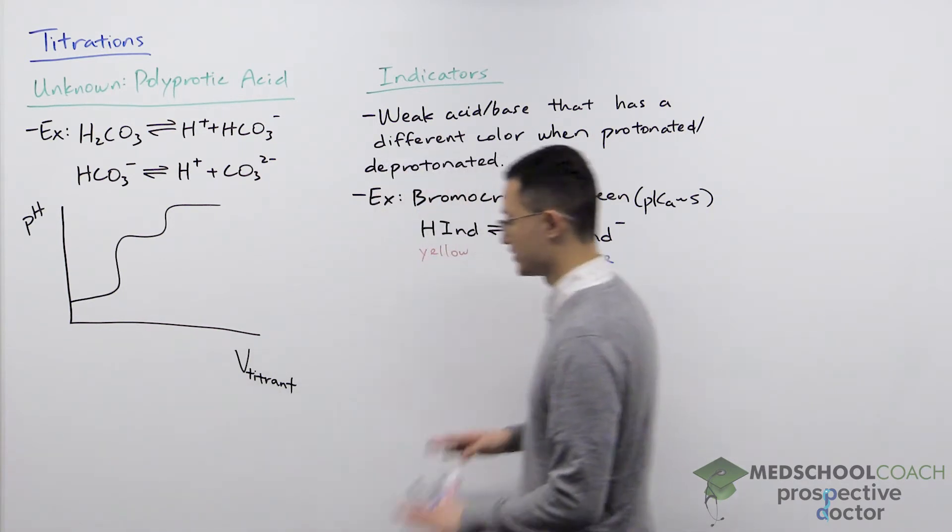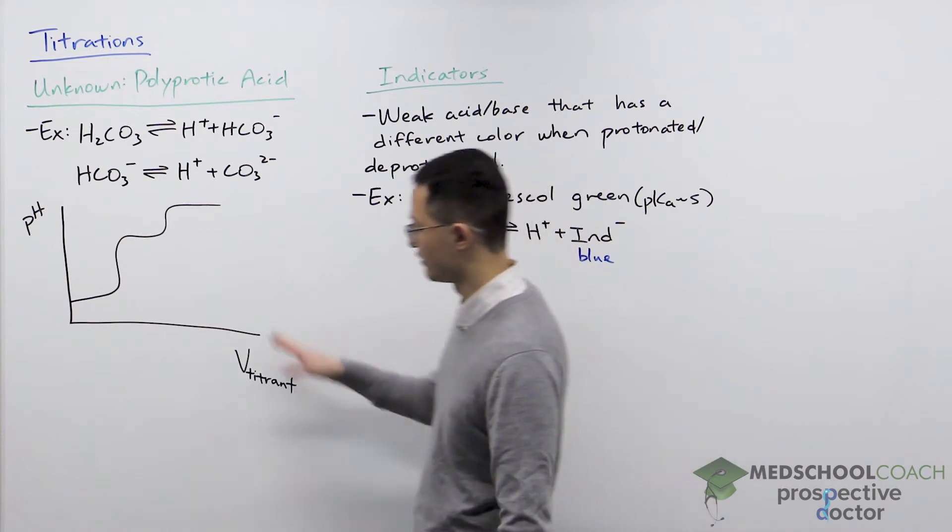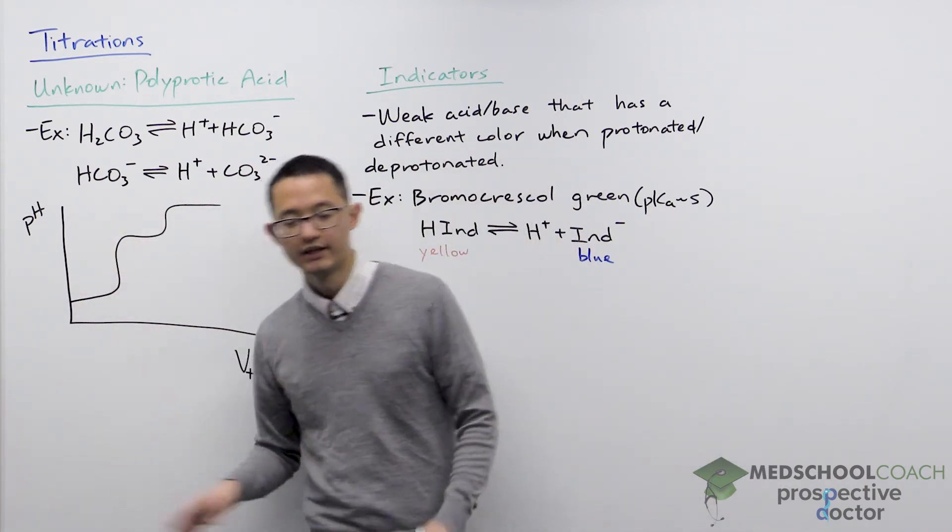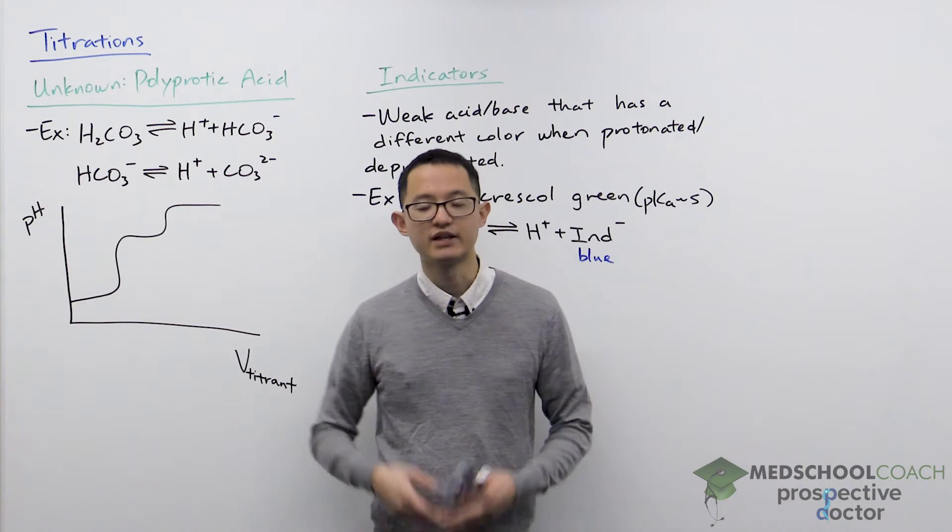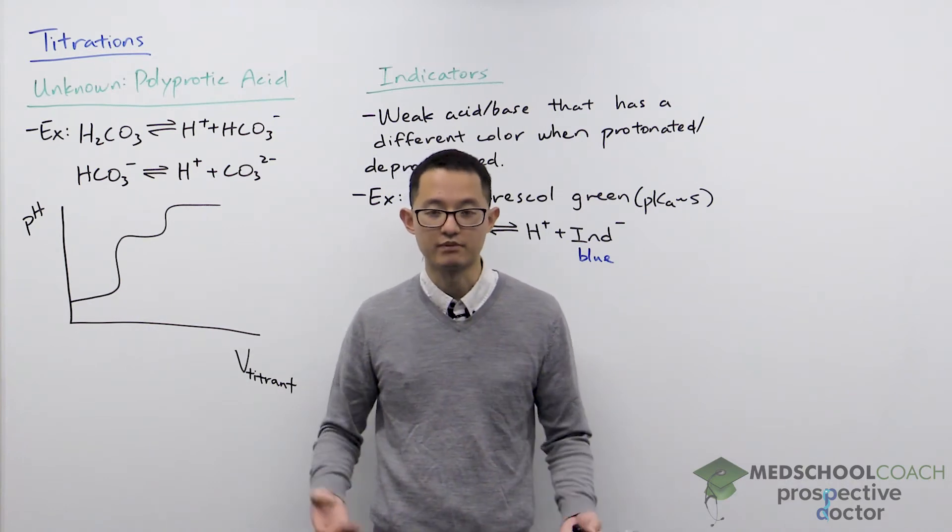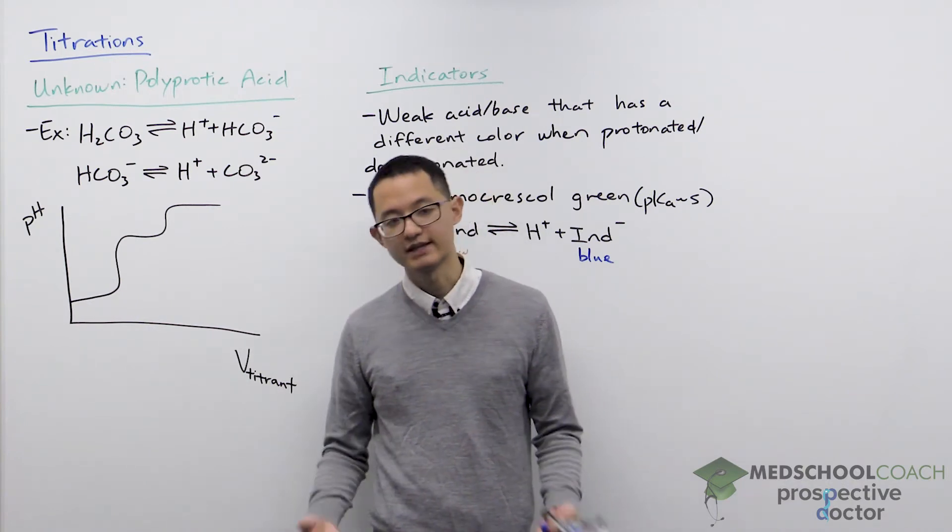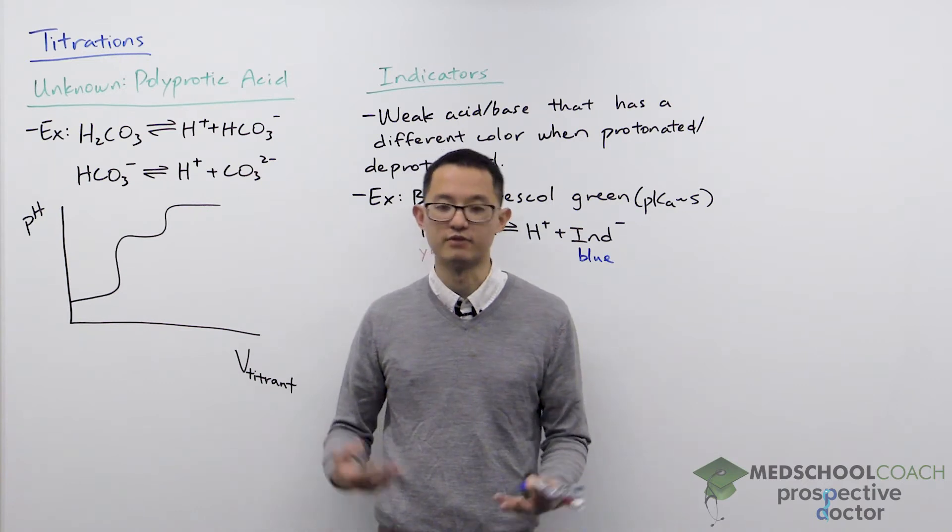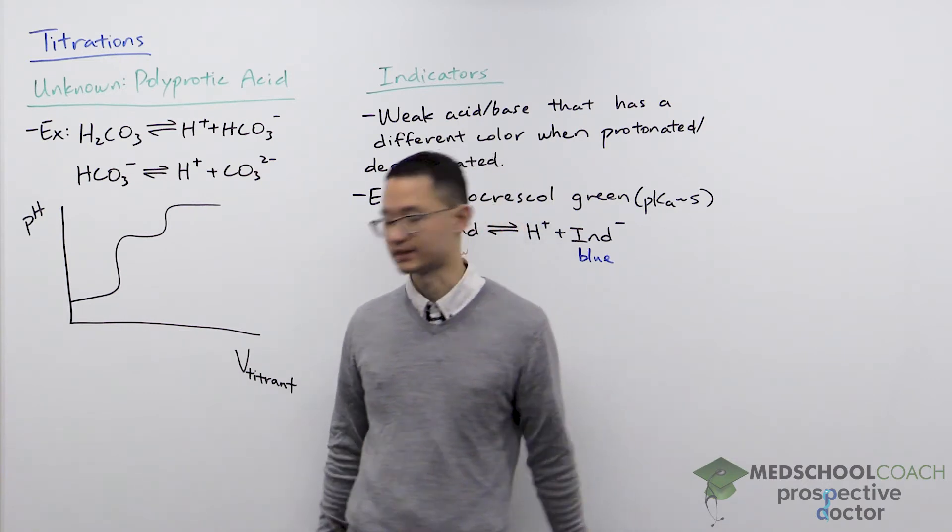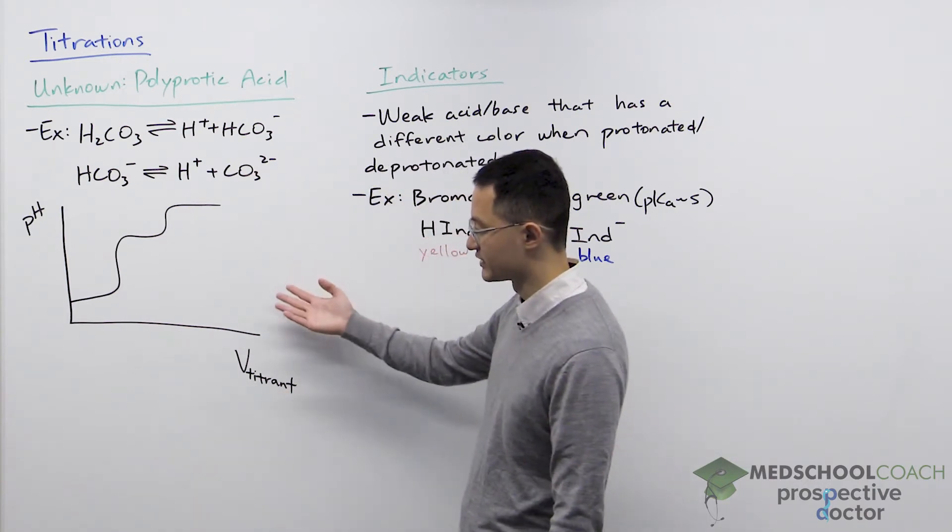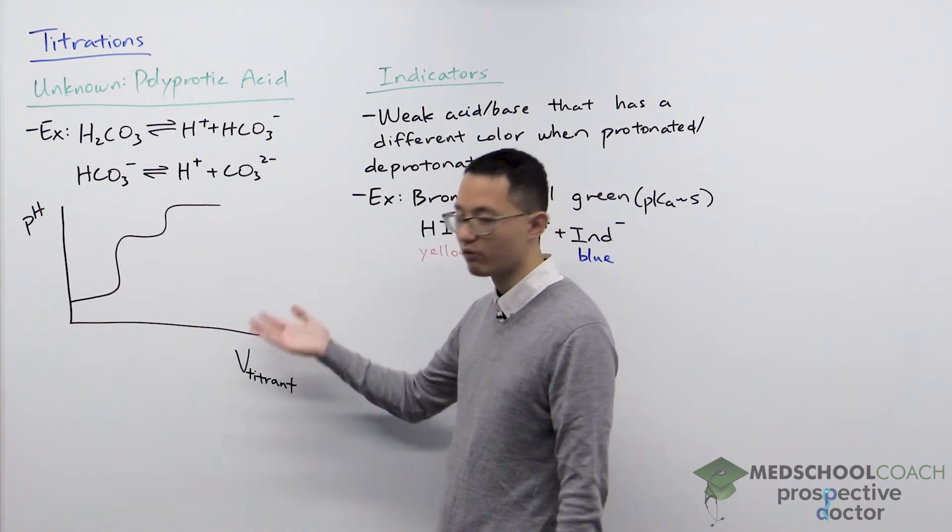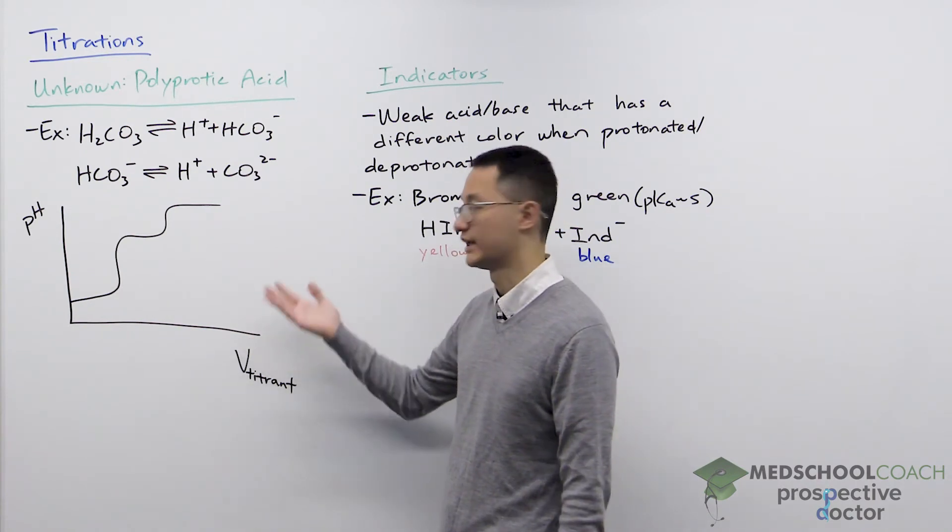To see how the titration curve is different, we can look at this diagram right here. The nice thing is when you look at the curve, you can immediately tell what's different from a monoprotic acid. So that makes it pretty obvious on the MCAT when you're dealing with a polyprotic acid. Now the main difference is that you have more than one half equivalence point and equivalence point.